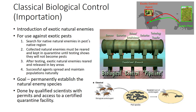The primary organisms used in classical biological control programs in the United States have been insects that parasitize other insects, or insects that prey on pest insects, mites, or weeds. Ideal species belong to groups with very restricted host preferences so that non-target or beneficial species will not be affected.